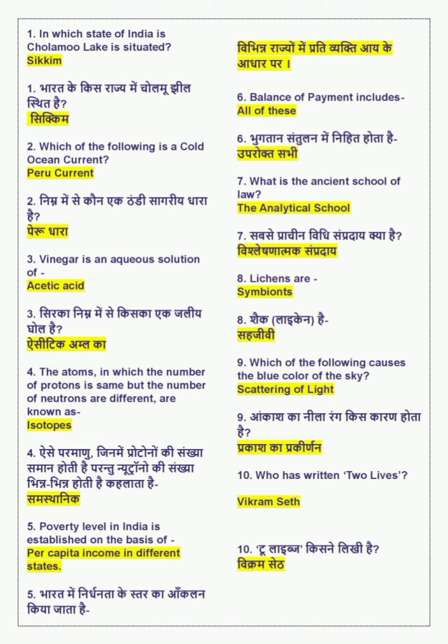Which of the following causes the blue color of the sky? Scattering of light. आकाश का नीला रंग किस कारण होता है? प्रकाश का प्रकीर्णन।